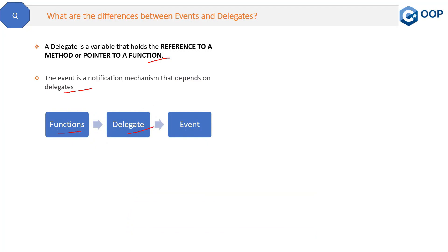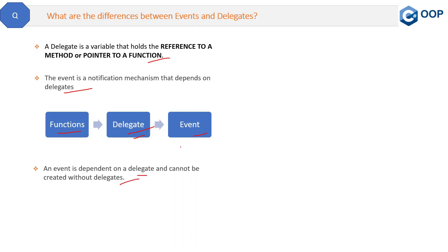Now let me show you in the diagram. A delegate depends on functions, and similarly an event depends on delegates. So that is the relationship between functions, delegates, and events. With that said, an event is dependent on a delegate — it cannot be created without delegates. Events are nothing without delegates.